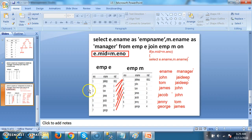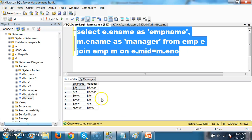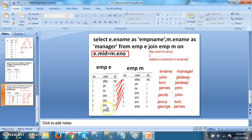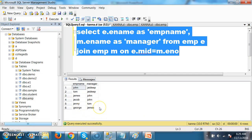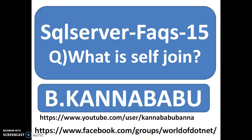This is a very popular query in self-join. The output is: John–Jaydeep, Tom–Jaydeep, James–John, Jacob–John, Jenny–Tom, George–James. Self-join means joining the table by itself. For more videos, you can subscribe to my YouTube channel and Facebook group. Thank you, have a nice day.